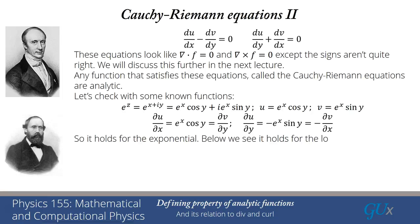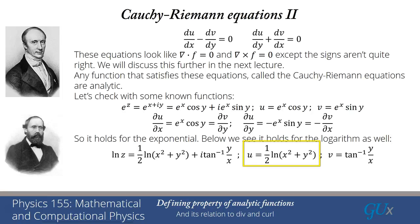Now let's take a look at what happens with the logarithm. So log of z, as you recall, is 1 half log of zz bar, so 1 half log x squared plus y squared, plus i tan inverse y over x. That means u is 1 half log x squared plus y squared, and v is equal to the arctangent of y over x.